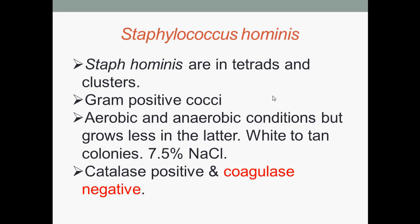Next, Staphylococcus hominis. Staphylococcus hominis are in tetrads and clusters. They are Gram-positive cocci. They grow in both aerobic and anaerobic conditions but grow less in the latter. They form white to tan colonies and they grow in the presence of 7.5% sodium chloride. They are catalase positive and coagulase negative.